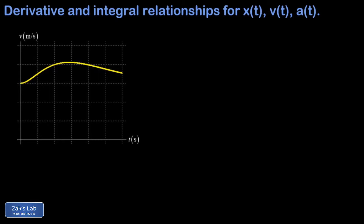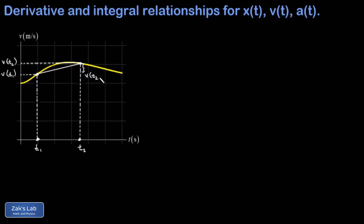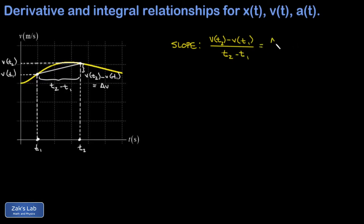Next, we go one level deeper and establish the derivative and integral relationships between velocity and acceleration. We label two moments t1 and t2, draw a line segment connecting two points on the v-t graph, and think about the rise — v(t2) minus v(t1), also called delta v — divided by the run, t2 minus t1. The slope is delta v over delta t, with units of meters per second per second, telling you how fast the velocity is changing. This is average acceleration: the total change in velocity divided by how long it took.